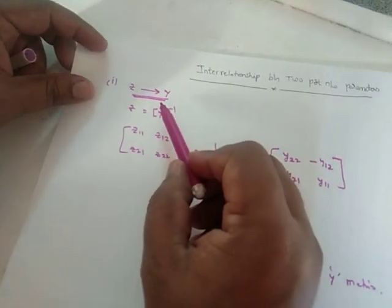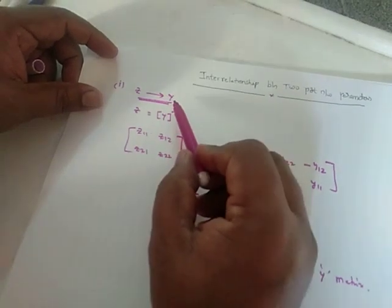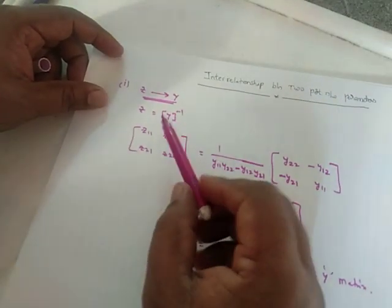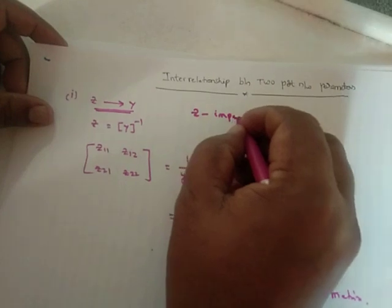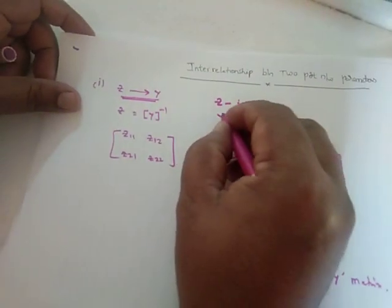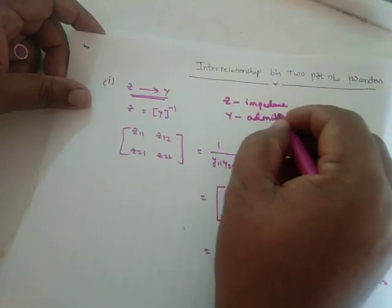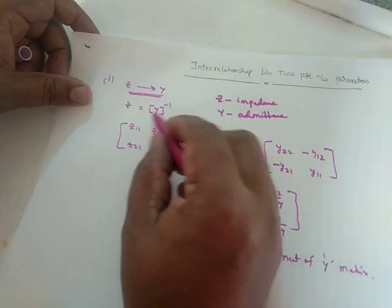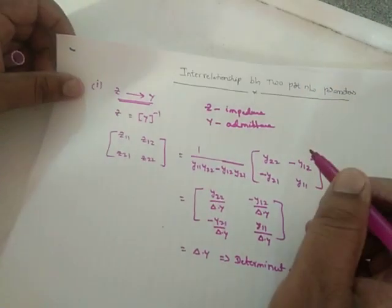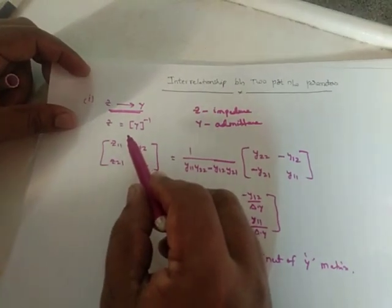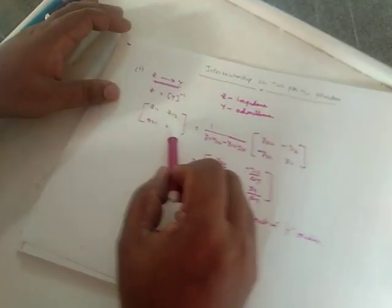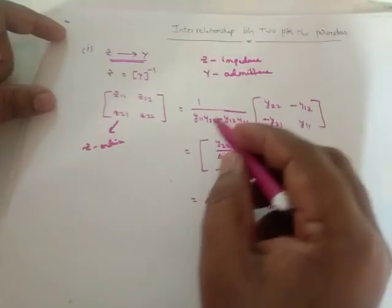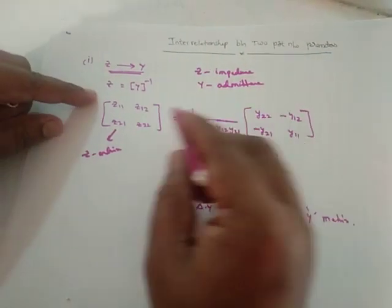First, we are going to look at Z parameters in terms of Y parameters, which we discussed in previous lectures. Z parameter is the impedance parameter and Y parameter is the admittance parameter. The relation between these two is Z equals Y inverse, or Y equals Z inverse. Now we are going to convert Z parameters in terms of Y parameters.